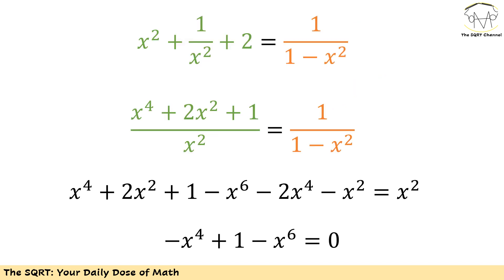Now I'm going to remove all the fractions and move everything to the left hand side. First I simplify what I have on the left hand side, then the right hand side, then multiply everything by x² times (1 minus x²) and move everything to the left. What we end up with is negative x⁴ plus 1 minus x⁶ equals 0. We didn't do much here — just simplified based on algebraic rules.